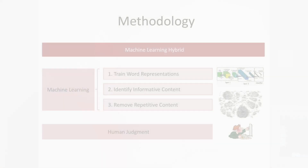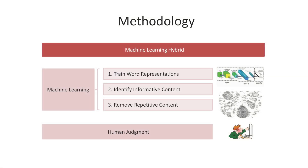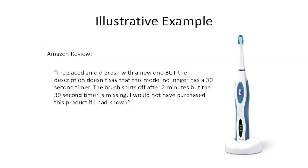In this paper, we propose an approach which uses machine learning to pre-screen content and select which content we submit to the humans, and then we rely on human judgment to formulate the underlying customer needs. Consider the following Amazon review: a customer complains that she replaced an old brush with a new one, but the 30-second timer is missing. The brush shuts off after two minutes, not with the 30-second timer, and she would not have purchased this product if she had known.